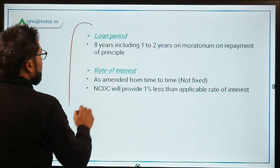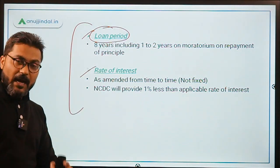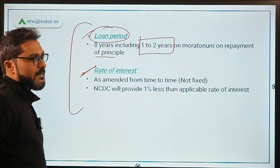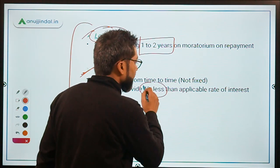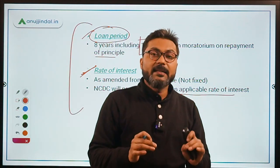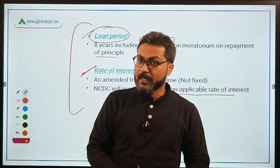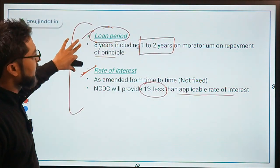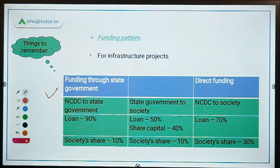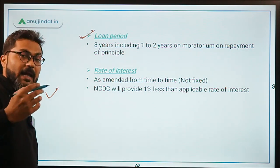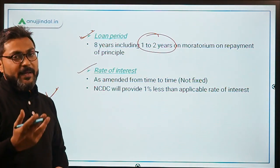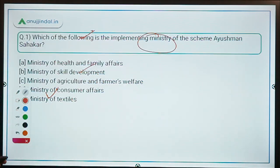Two more important points: the loan period is 8 years with a moratorium on repayment of principal of one to two years, though the moratorium period is not fixed. The rate of interest is also not fixed, but NCDC will provide a loan at one percent less than the prevailing applicable rate of interest. These are the two additional things you need to remember.